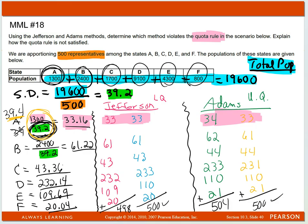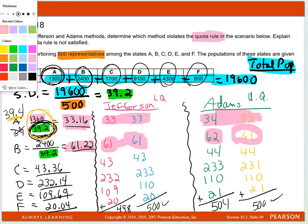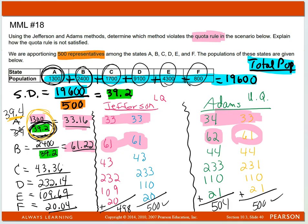When I got to 61.22, it can either be 61 or 62. These are both 61, this is 62, and this is 61.